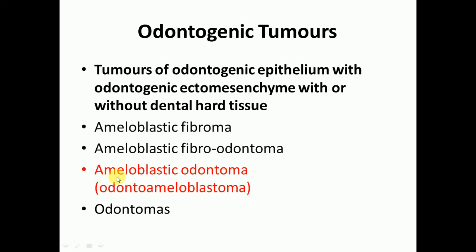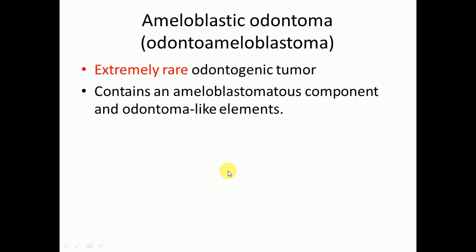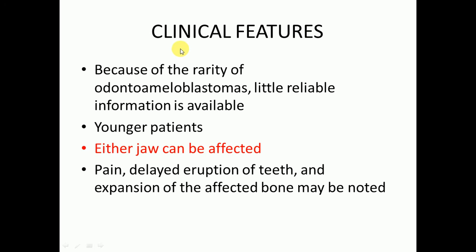Ameloblastic odontoma will have both characteristics of ameloblastoma and odontoma. It is also known as odonto-ameloblastoma. It is an extremely rare odontogenic tumor and it will contain both an ameloblastomatous component and odontoma-like elements, as the name suggests.